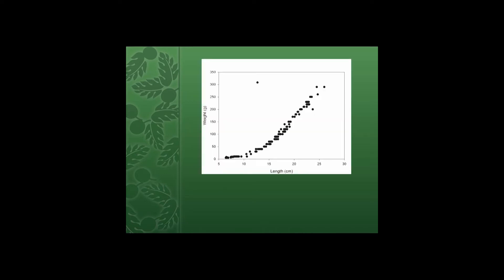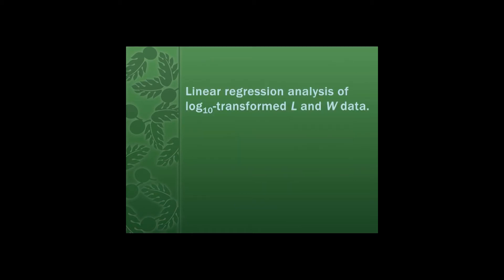Here I've used a graphics program to plot length on the x-axis and weight on the y-axis. The way we'll describe this relationship between length and weight is to raise length to some power b and multiply that by some constant a. The value of a is always positive and is typically very close to zero, and the value of the exponent b is typically very close to three. We're going to find that constant a and the exponent b by finding the logarithm of the length and weight data and then performing linear regression analysis on those logarithmically transformed data.